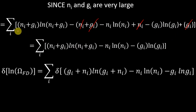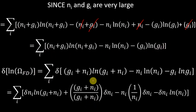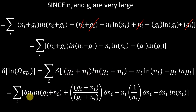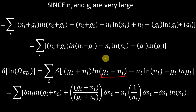Now what we will do is take its derivative. We take the derivative of this whole expression, and this is what it comes out to be. Since g_i is not subject to variation, its derivative is zero. So this is the first function times derivative of the second, which gives d(n_i), plus the second function times (g_i + n_i) times the derivative of log(x), which is 1/x — so we get 1/(g_i + n_i), and applying the chain rule gives us d(n_i).